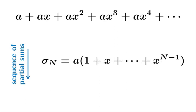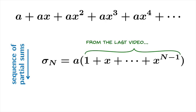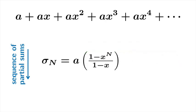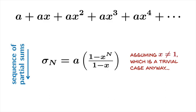We can factor out an a from this with no problem. And from the last video we had a nifty formula for this expression: it was just 1 minus x to the n over 1 minus x. Of course this formula only works when x is not equal to 1, but that case isn't such a loss either because that's also trivial — it just gives you the series a plus a plus a plus dot dot dot. So that's a trivial kind of series to analyze as well, and so far no big losses with our assumptions.